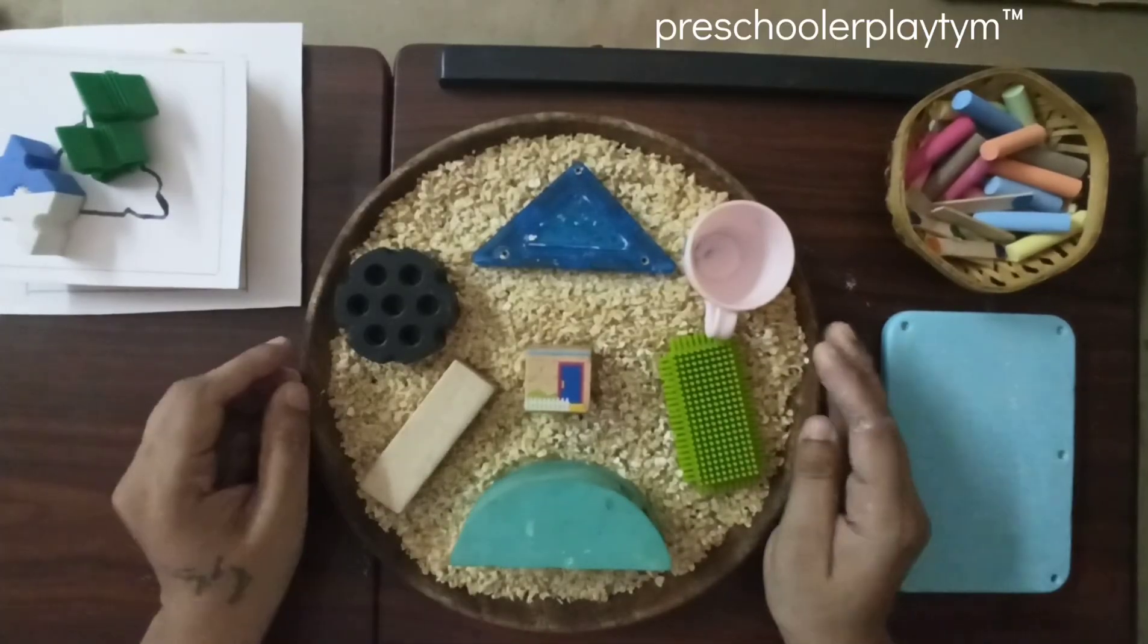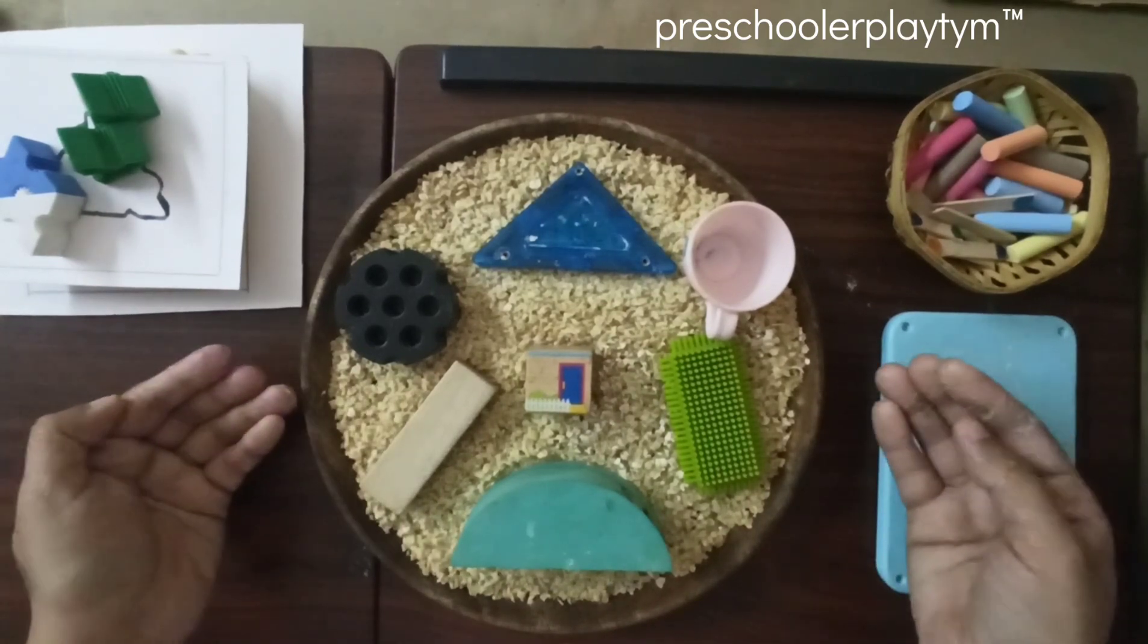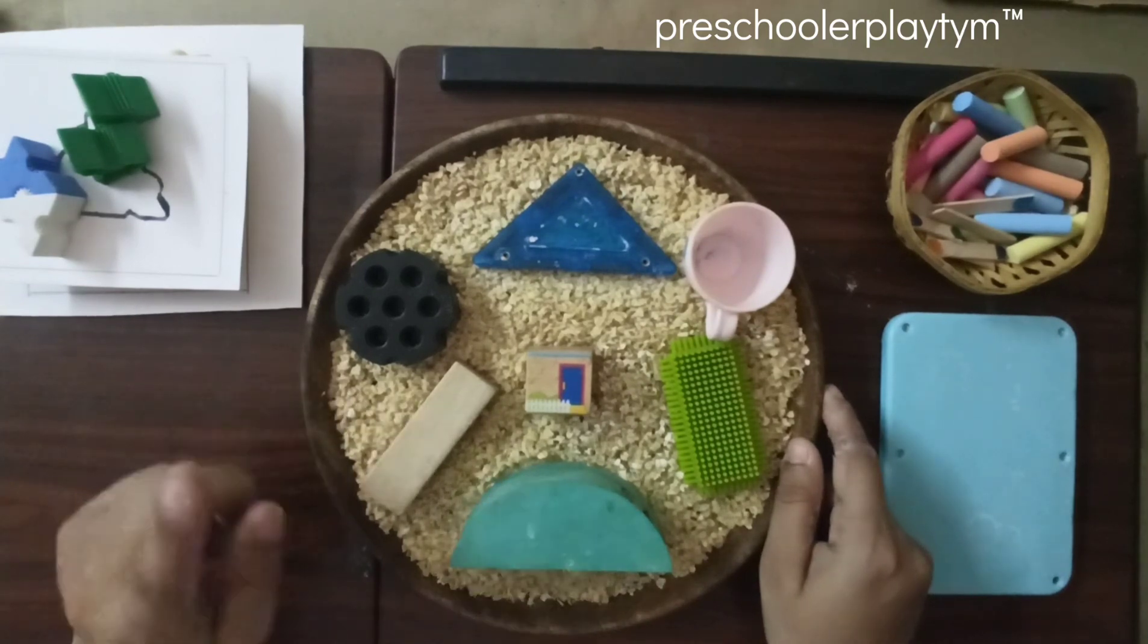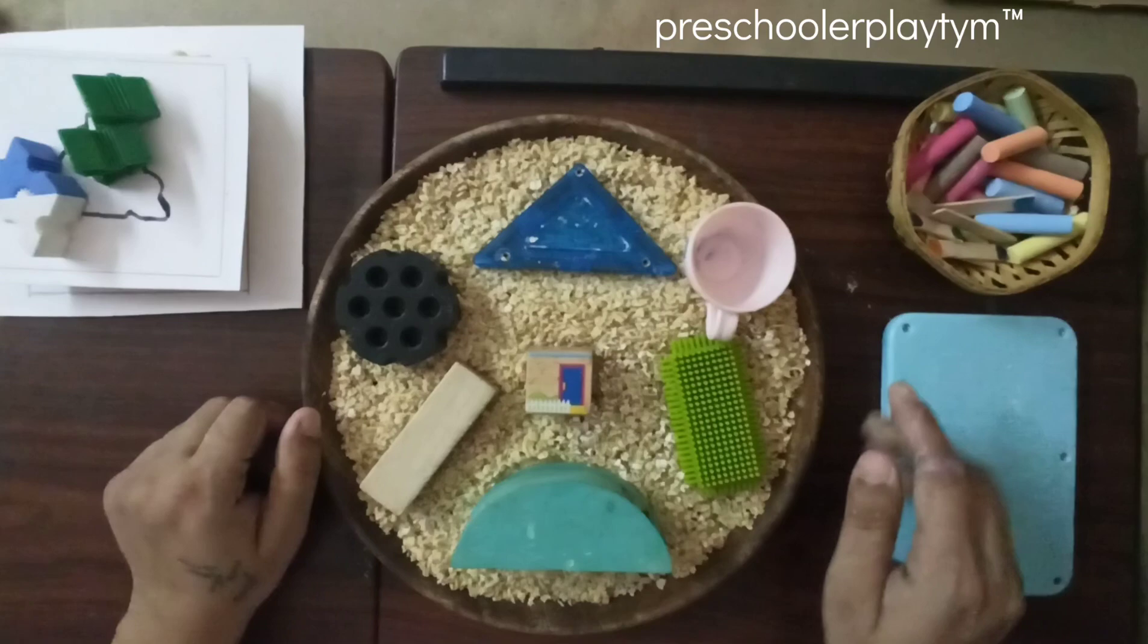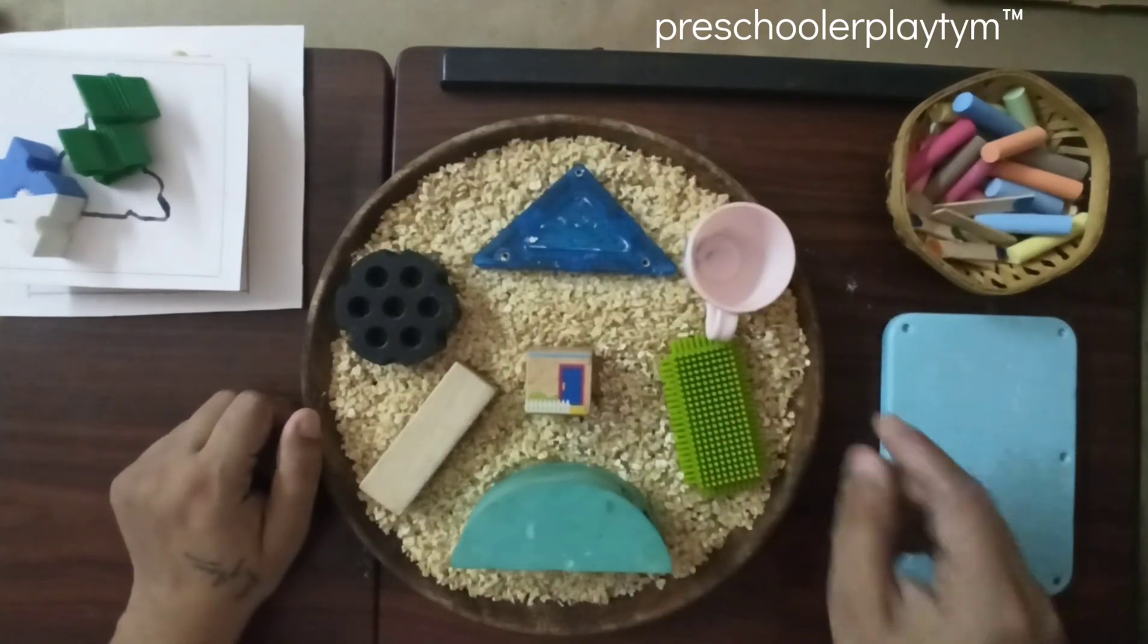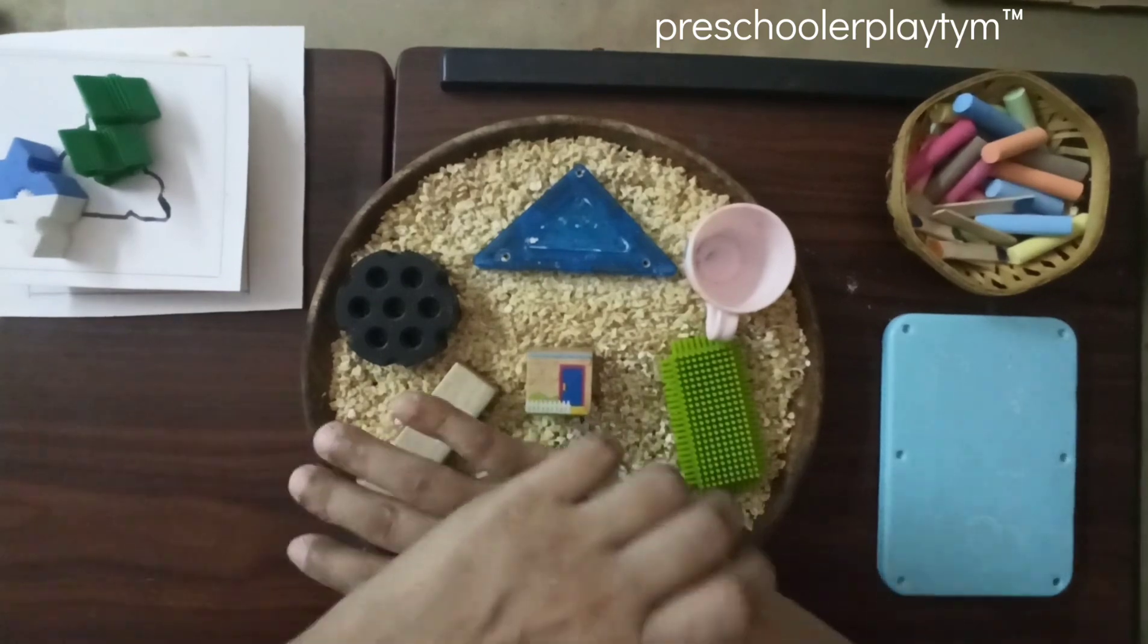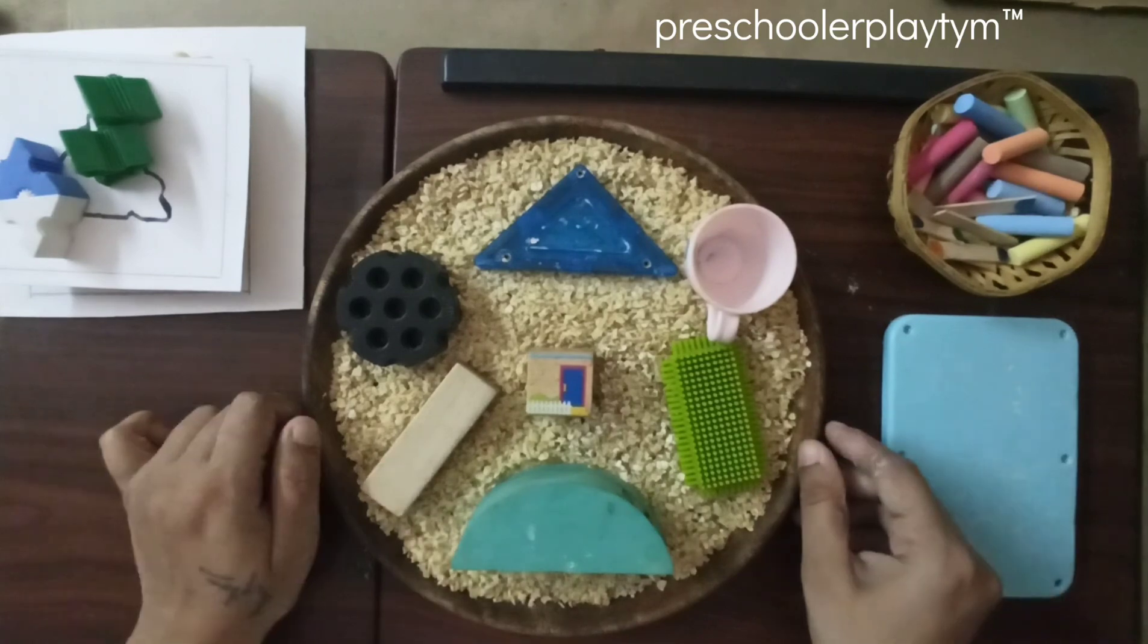For my first activity you would need a plate or a tray, some random toys and oats. You can also use salt. What you have to do is place the oats on the plate and put these little toys. Press and stamp them and let them dry for 10 minutes.